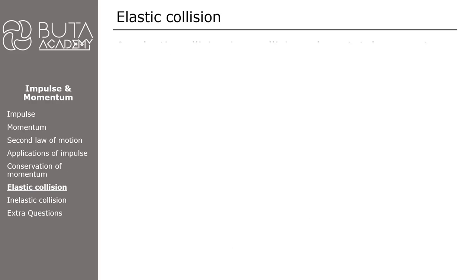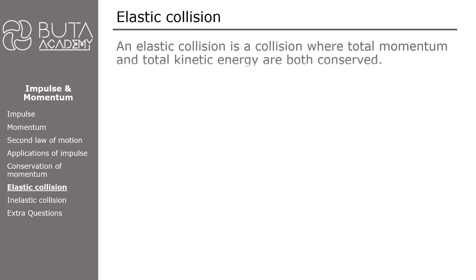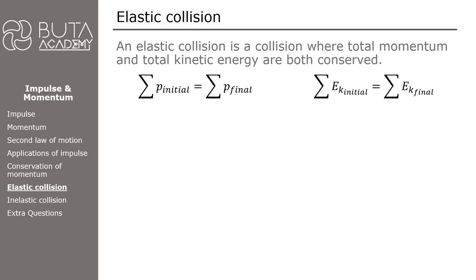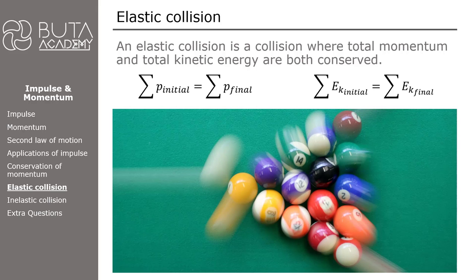Collisions can be elastic or inelastic. An elastic collision is one where both total momentum and total kinetic energy are conserved. Although a perfect elastic collision cannot actually occur since there is always some kinetic energy loss, the collision of pool balls can be regarded as elastic because the energy loss is negligible enough to be ignored.